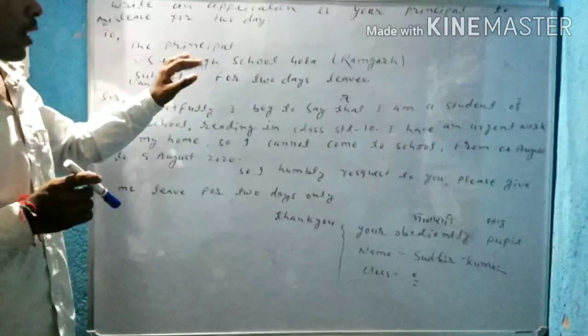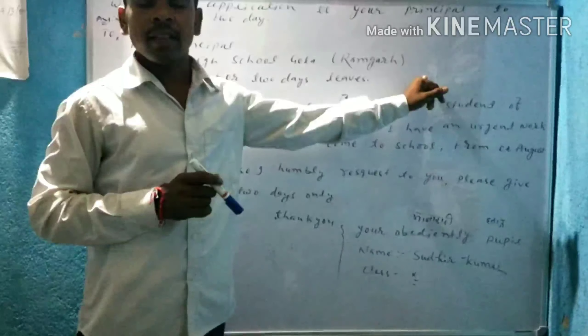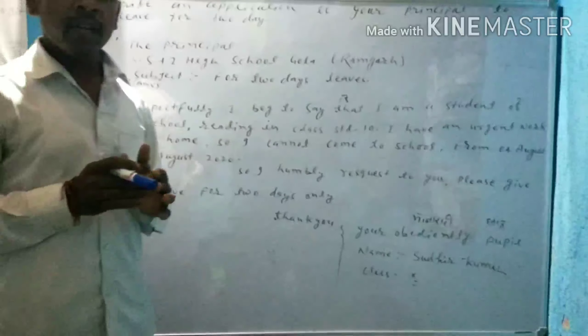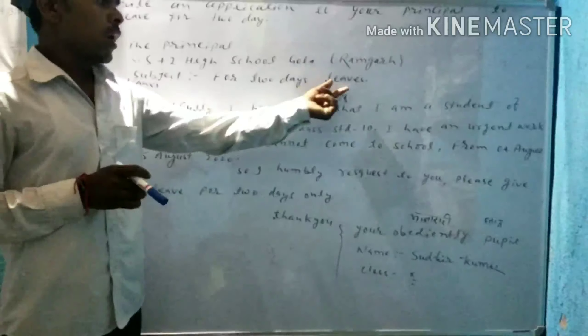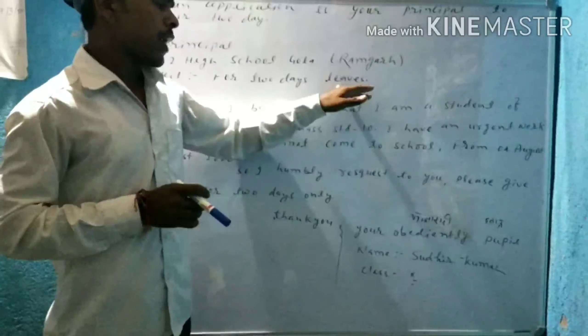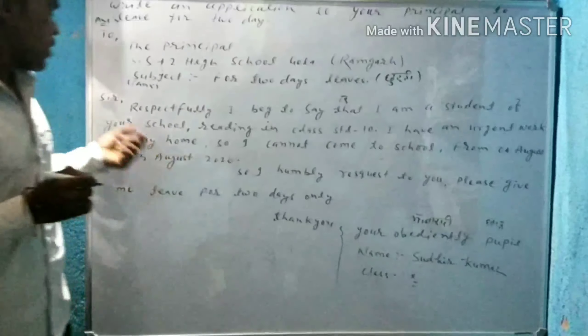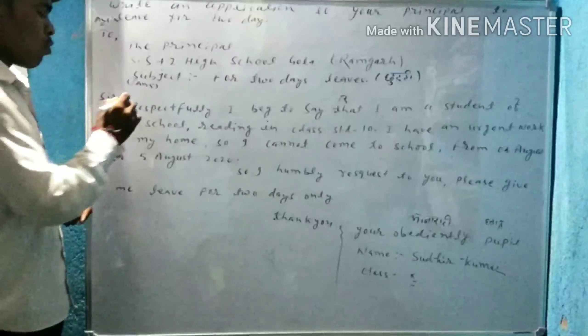अपने school का नाम यहाँ enter करें — जैसे SSH Plus Two High School, Gola, जो कि Ramgarh District के अंतर्गत आता है। फिर Subject लिखना न भूलें — अगर आप application लिख रहे हैं तो Subject भी लिखें। Subject है: छुट्टी के लिए।